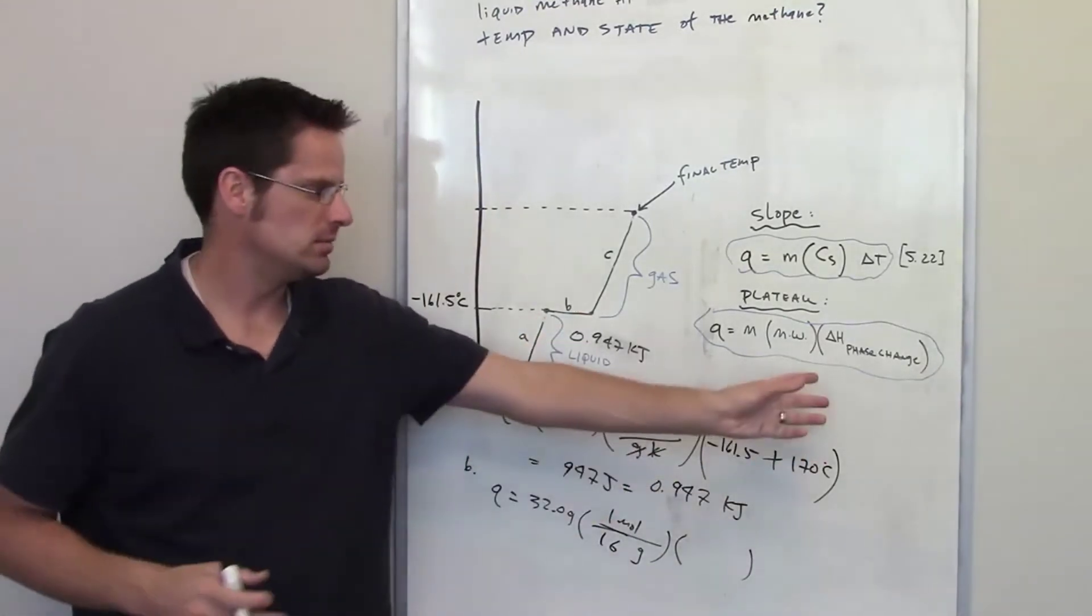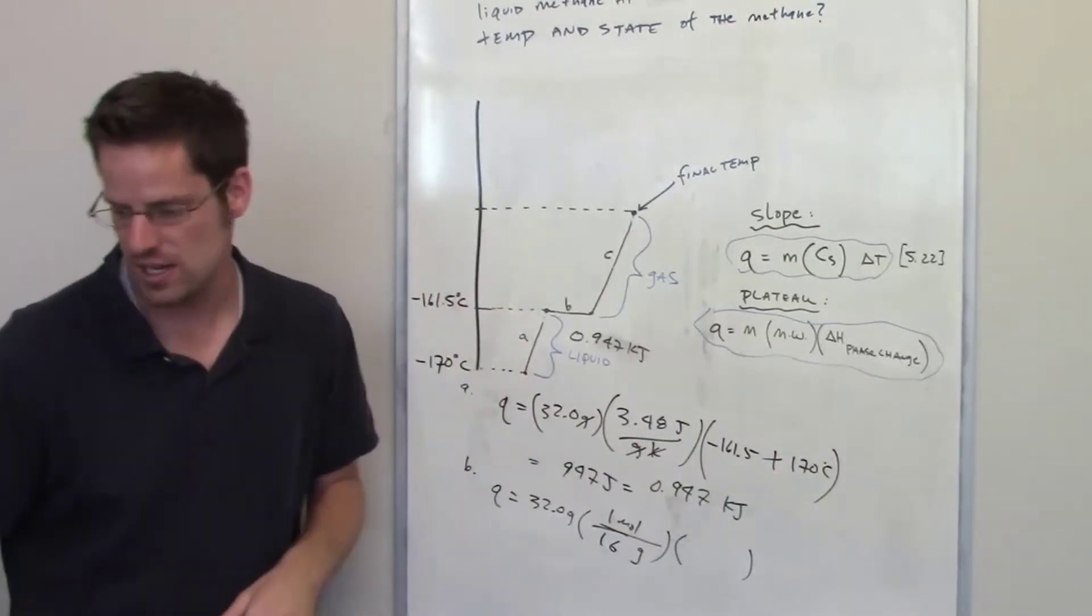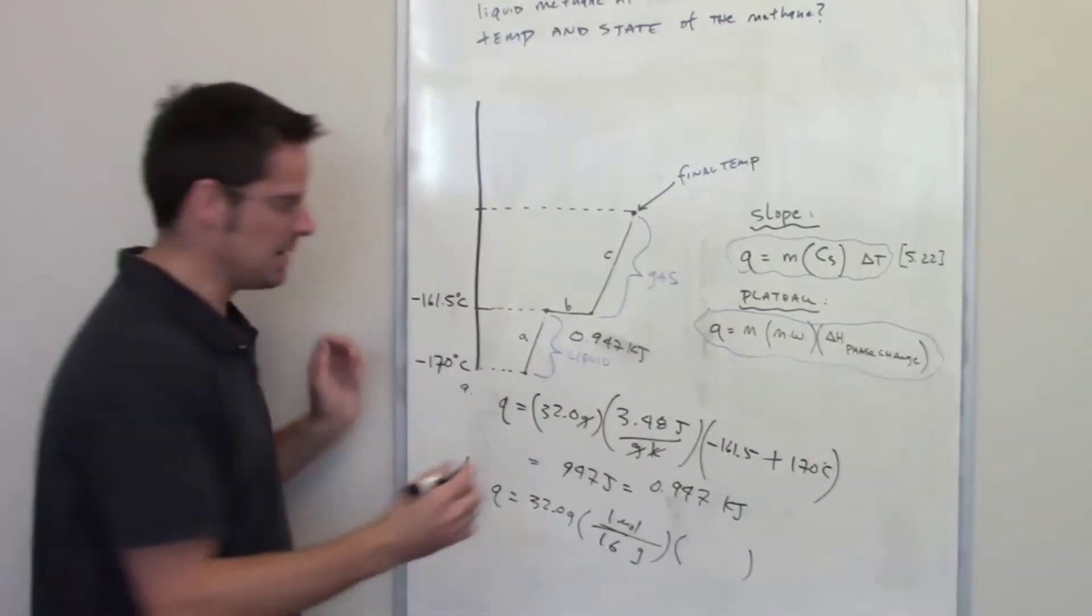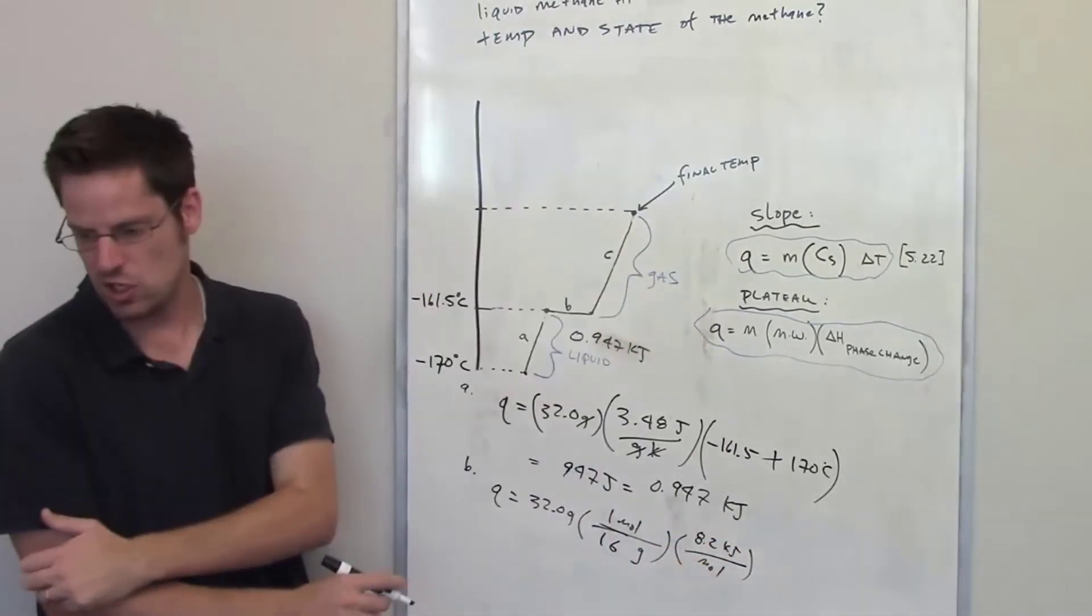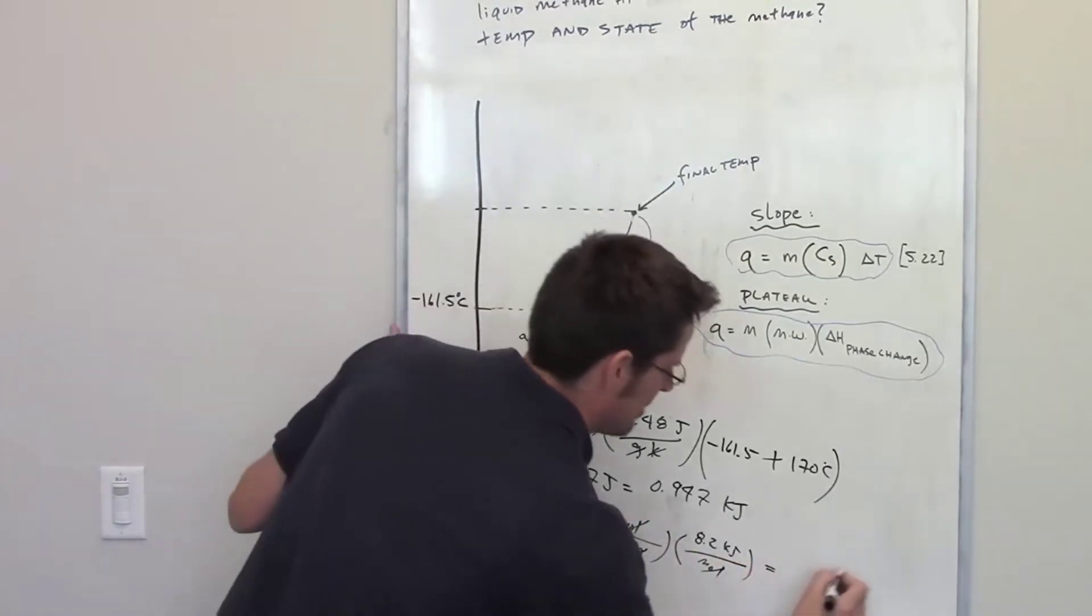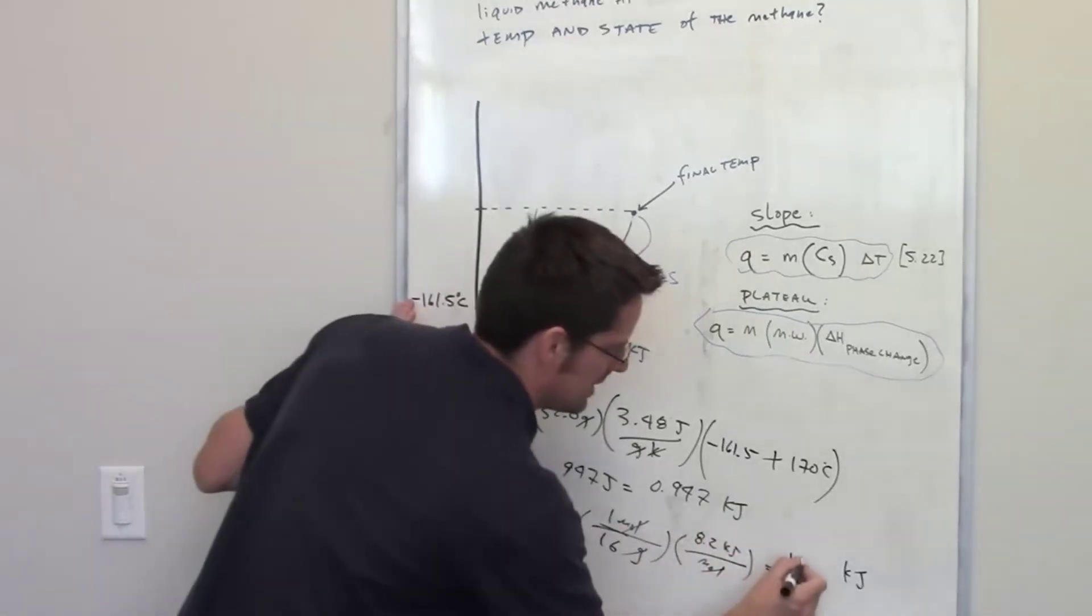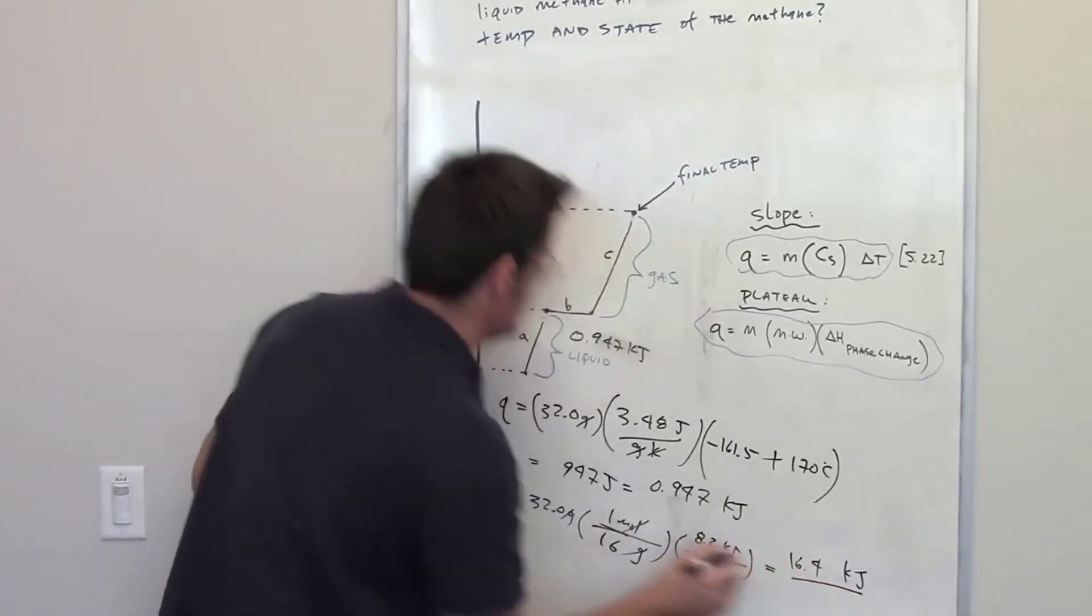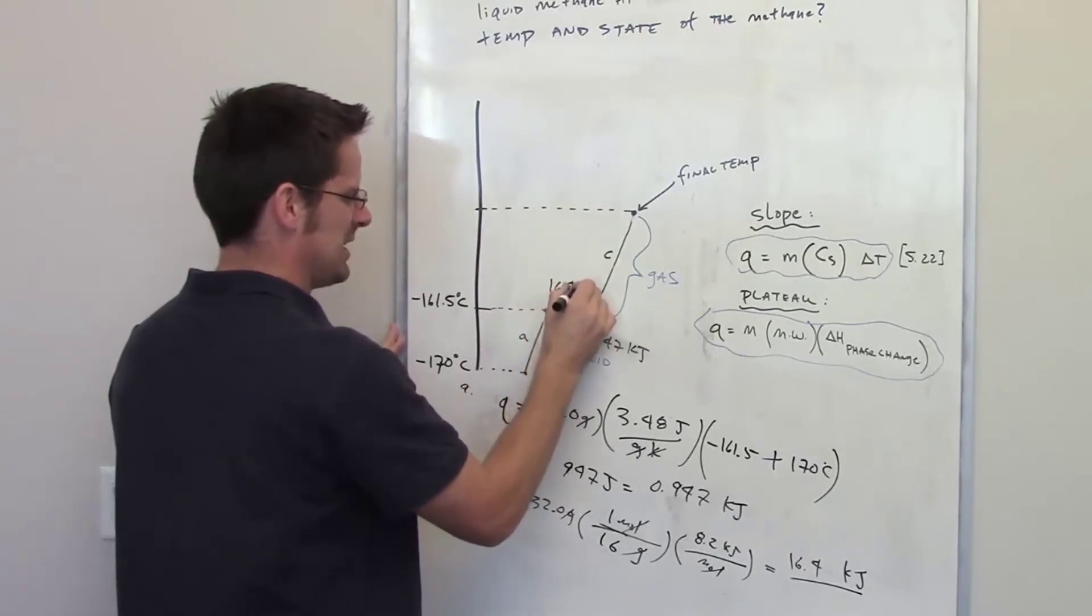The delta H, that enthalpy of phase change for that particular phase change, liquid to gas, has been given to me in the problem as 8.2 kilojoules per mole. Now all I have to do is cancel out my units, and I'm left with a certain number of kilojoules. I throw that in my calculator, and the answer that I end up getting is 16.4 kilojoules. That means that going across B costs me 16.4 kilojoules.